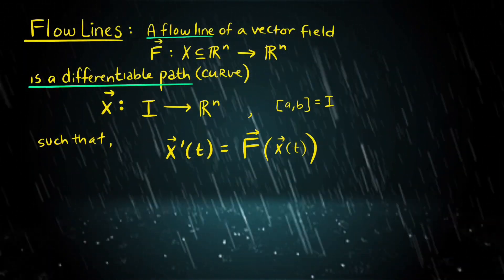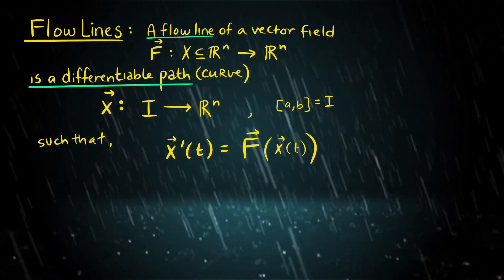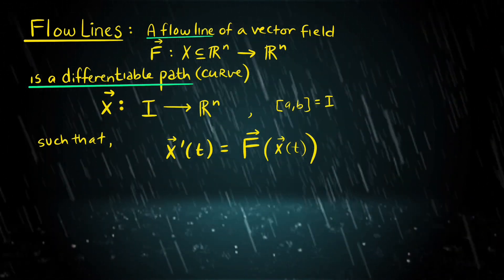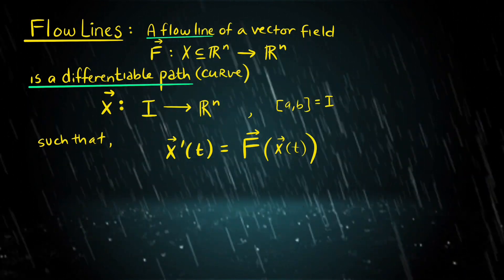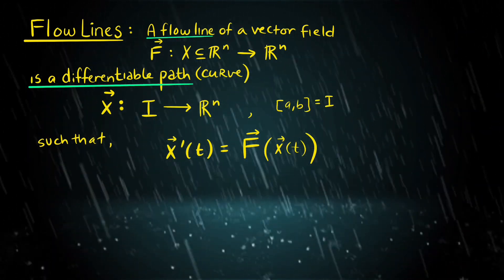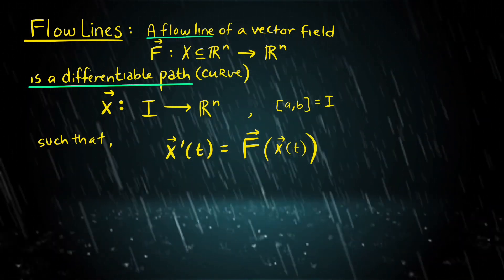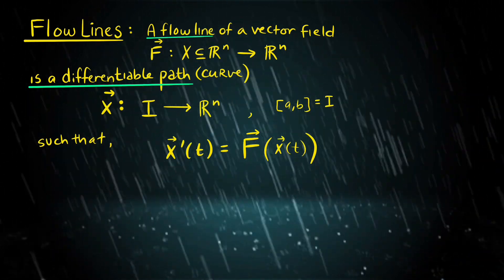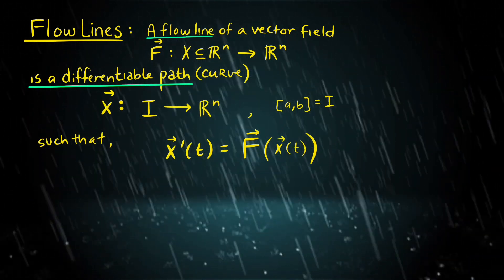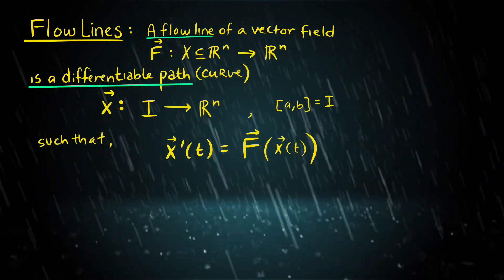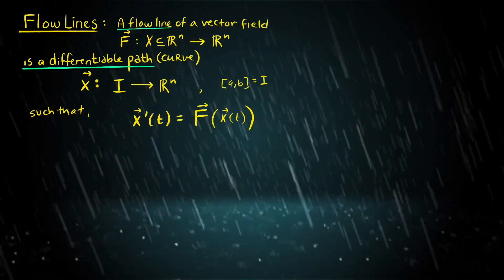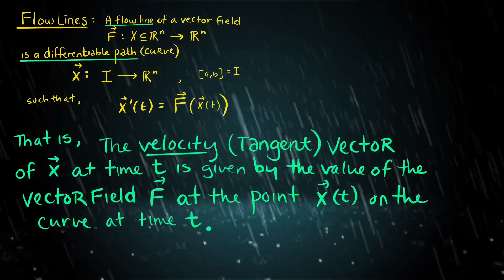Next we will discuss flow lines, a differentiable path over some interval which flows over the terrain of our field such that the velocity vector x' yields our vector field x' = F(x). In this way, x is a parameterized curve of t tracing out the path in the field of F.